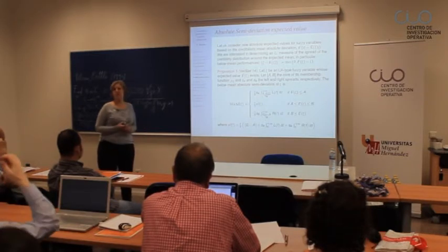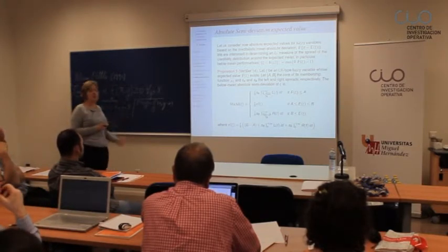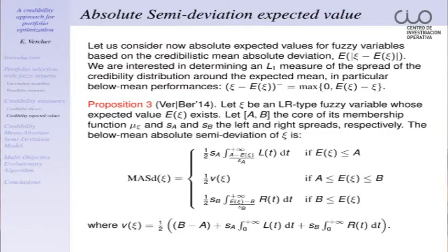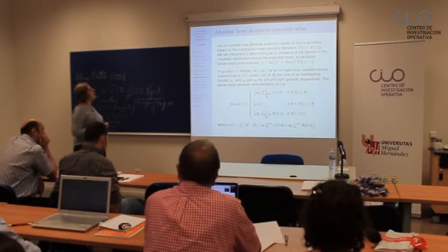However, this is not the case if we work with absolute expected values. If we work with absolute expected values — in our case the downside risk — we are interested in determining a measure of the spread of the credibility distribution around the expected mean: the below-mean performance. We have an expression for the below-mean absolute semi-deviation, which is our measure of downside risk. There are some relations when the expected value is in the core, but when the expected value is outside the core, there are no equivalences. Therefore, uncertainty is better measured using credibility distribution than using possibility distribution when working with absolute expected values.